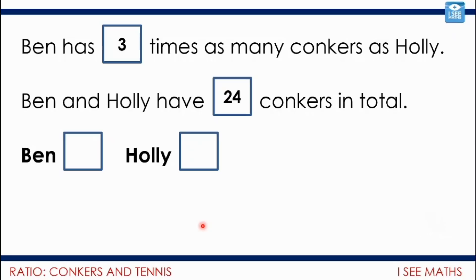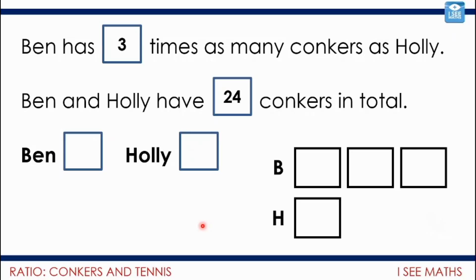Let's have a look. In the drawing I make sure Ben has three times as many as Holly, giving four sections. I divide 24 by 4, which gives 6 in each section. So Ben has 18 and Holly has 6. You can check: 18 plus 6 is 24, and 18 is three times more than 6.